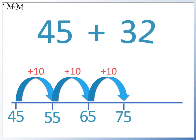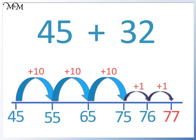We now add 2 jumps of 1. We add 1 to go from 75 to 76. We add 1 to go from 76 to 77. 45 plus 32 equals 77. We add 3 tens by making 3 jumps of 10, and 2 ones with 2 jumps of 1.